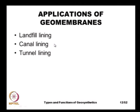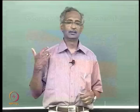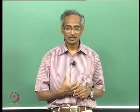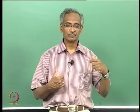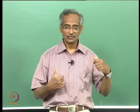Some applications of geomembranes include landfill linings, canal lining materials, and lining inside tunnels to prevent rainwater from flowing through or to prevent moisture from entering the tunnel. Here we see the lining of a landfill with a geomembrane — the main purpose is to ensure that products of toxic or hazardous waste do not flow through the landfill and contaminate the groundwater.